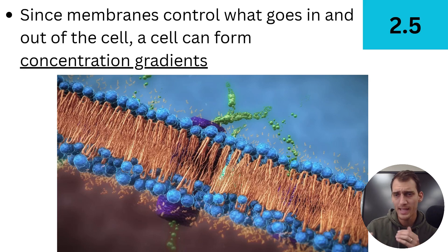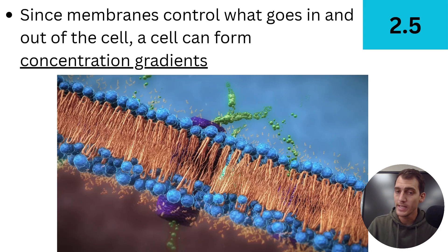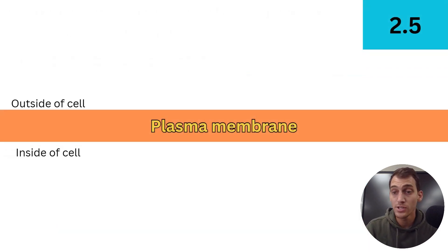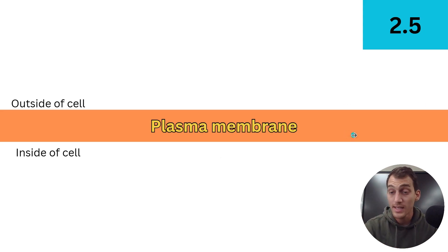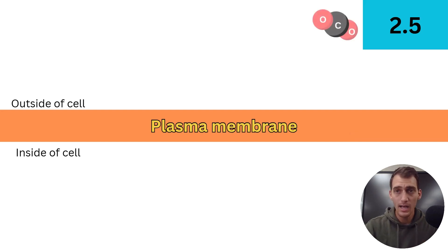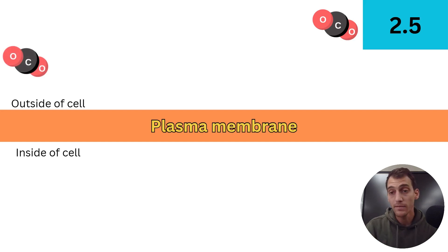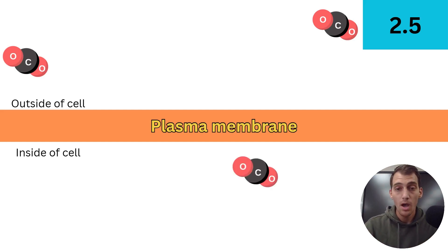Because a cell's membrane can let some stuff through but not other stuff, it can form concentration gradients — where there's a higher concentration of something on one side of the plasma membrane than the other. Here's an example: this orange line represents the plasma membrane. On the outside of the cell, I have some carbon dioxides — a byproduct of respiration, a waste product the cell has to get rid of.